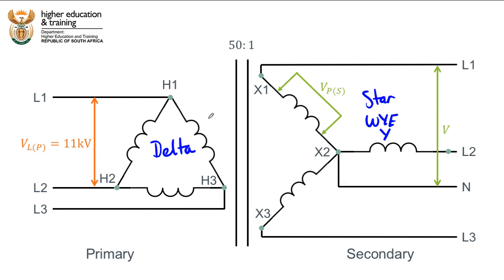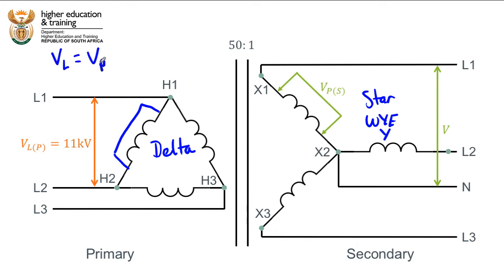Let's look at the delta side first. In the delta configuration, the voltage between the lines — the line voltage — is going to be exactly the same as the phase voltage. You can see diagrammatically that the voltage between those two points is the same as the voltage across the phase. So in a delta configuration, line voltage always equals phase voltage.